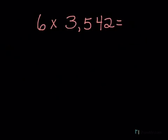In this first example, we have 6 times 3,542. I'm going to start out by using place value sections or an area model to multiply.